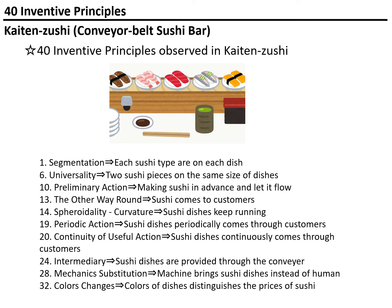Continuity of useful action: sushi dishes continuously come through to customers — even if you miss one, the next comes soon. Intermediality: sushi dishes are provided through the belt conveyor. Mechanics substitution: a machine brings sushi dishes instead of a human, and probably many of the sushi pieces are made by robots inside the restaurant. And color changes: different colors of dishes run in kaiten zushi restaurants, where the color of the dish distinguishes the price of the sushi. As we can see, we can recognize a lot of the 40 inventive principles in kaiten zushi.